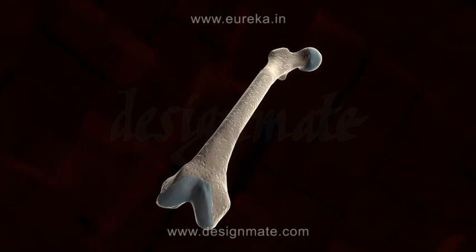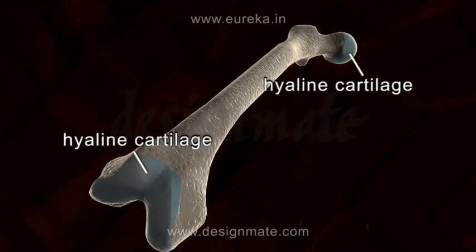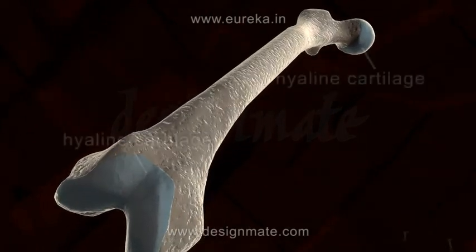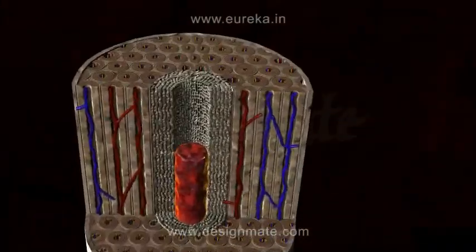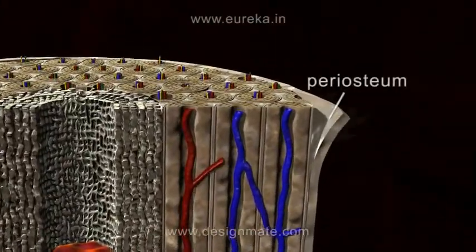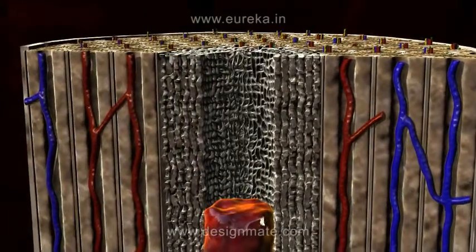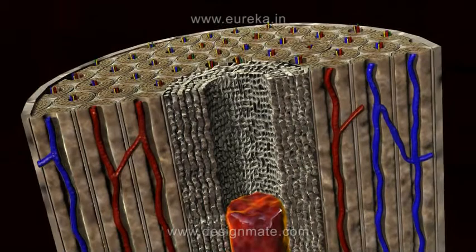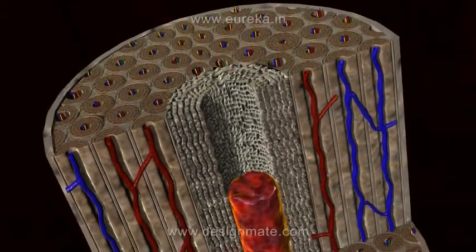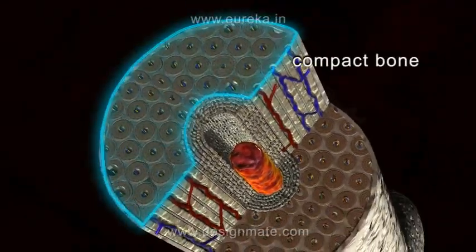The epiphysis regions are covered by a hyaline cartilage. The outer covering of the bone is known as the periosteum. Bone consists of numerous blood vessels. In the diaphysis region, next to the periosteum, is the layer of compact bone.